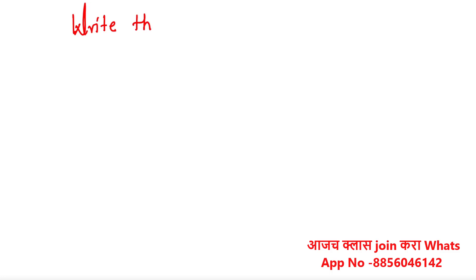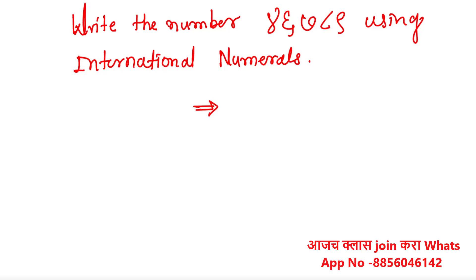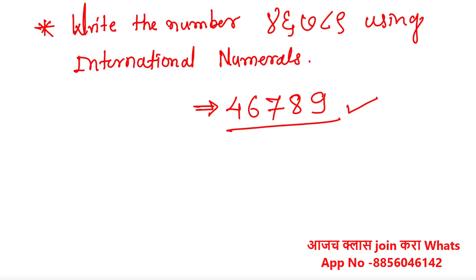As a practice question: write the number five, four, six, seven, eight, nine, zero, two using international numerals. The correct answer is 4, 6, 7, 8 and 9. These are very simple questions, and this type of question is also asked in exams.